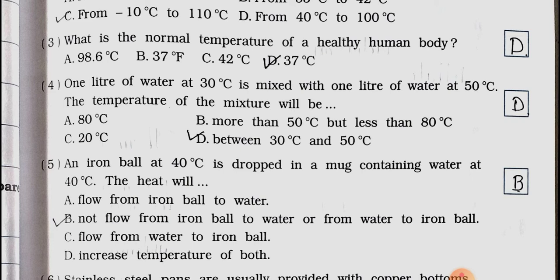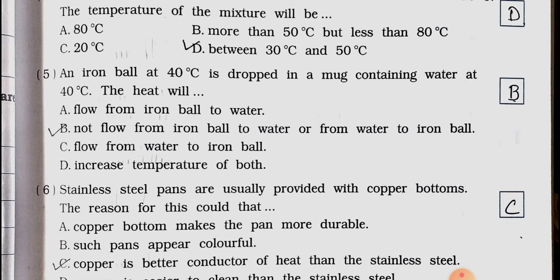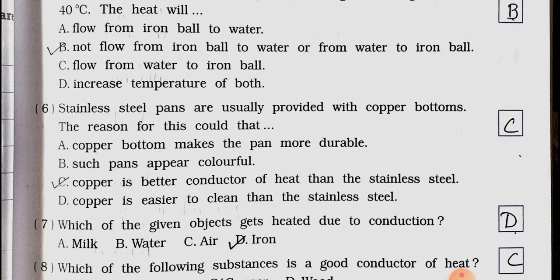Number 5: An iron ball at 40 degree Celsius is dropped in a mug containing water at 40 degree Celsius. The heat will: A. flow from iron ball to water, B. not flow from iron ball to water or from water to iron ball, C. flow from water to iron ball, D. increase temperature of both. Answer is option B, not flow from iron ball to water or from water to iron ball. The reason is because temperature of iron ball and the water in the mug is the same, it means they are in thermal equilibrium.